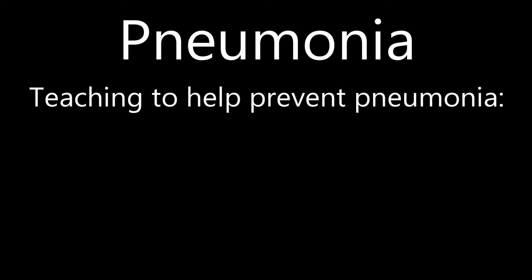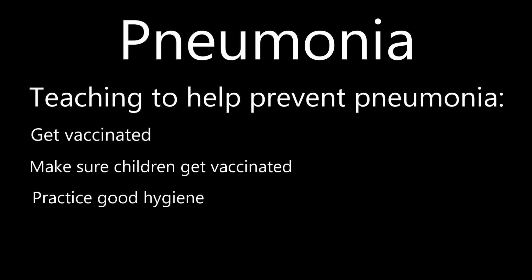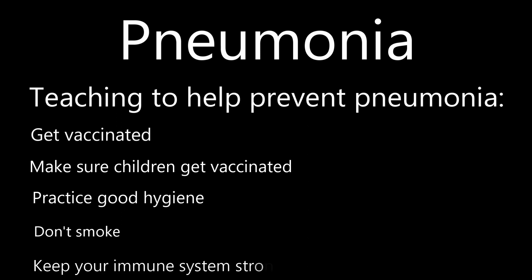To help prevent pneumonia: get vaccinated, as vaccines are available to prevent some types of pneumonia and the flu, and make sure your children are vaccinated. Practice good hygiene — wash your hands regularly or use alcohol-based hand sanitizer. Don't smoke, because smoking damages your lungs' natural defense against respiratory infections. Most importantly, keep your immune system strong by getting enough sleep, exercising regularly, eating healthy, and taking vitamins.